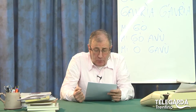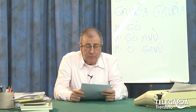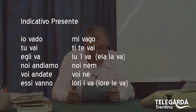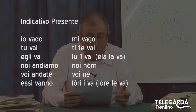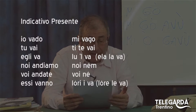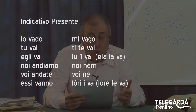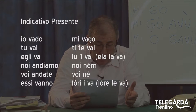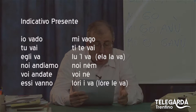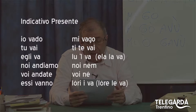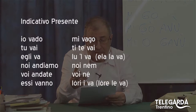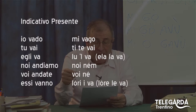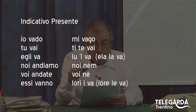Andiamo all'indicativo presente, che sarebbe in italiano: io vado, tu vai, e li va, eccetera. Allora: mi vago, ti te vai, lul va, noi nem, voi ne, lori i va. Naturalmente c'è la forma femminile: lul va diventa ela la va. L'ori va, l'ore le va.